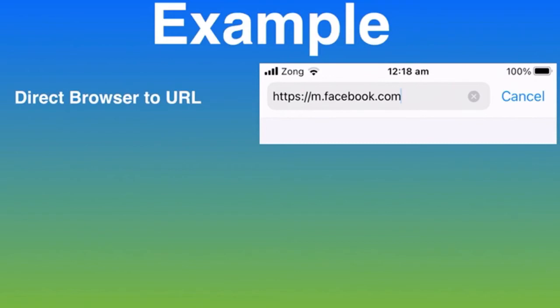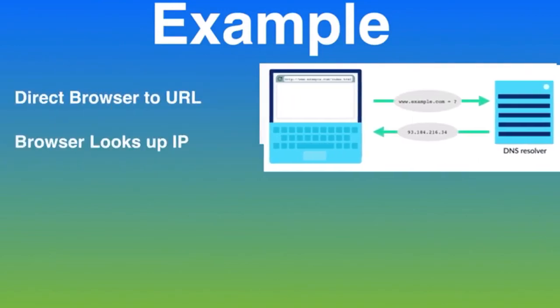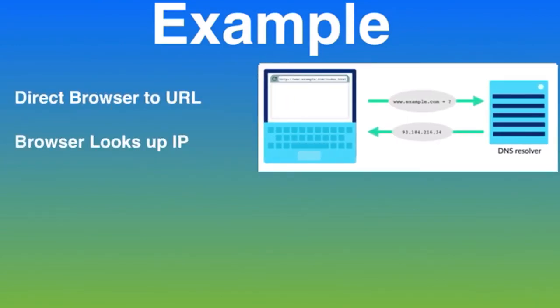Let me simplify HTTP with an example. In the first step, the user types a URL or web address in the web browser — for example, facebook.com. In the second step, the browser connects to a Domain Name Server and retrieves the corresponding IP address for the web server. The browser uses a DNS resolver to map the domain to an IP address.